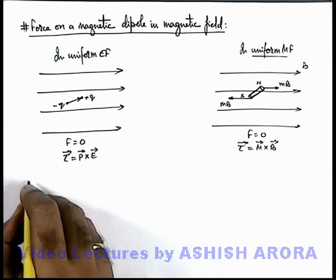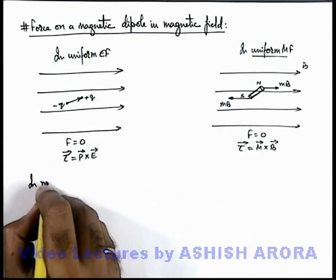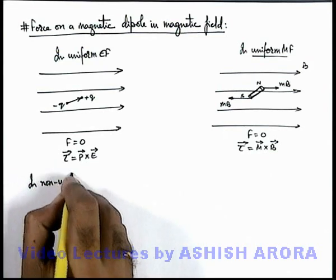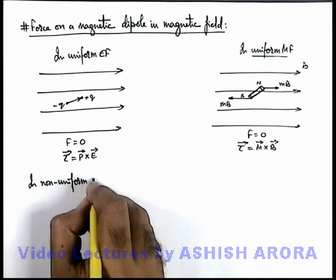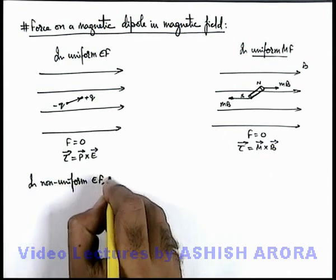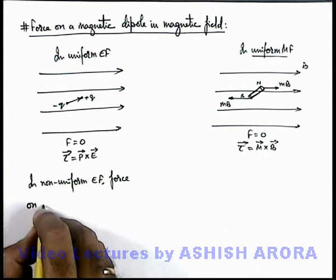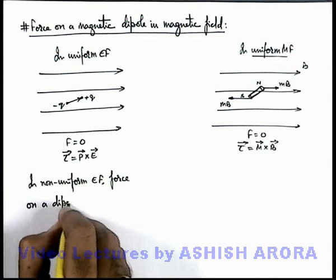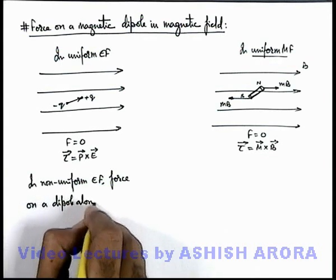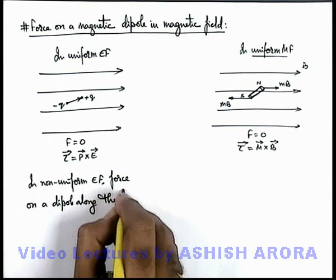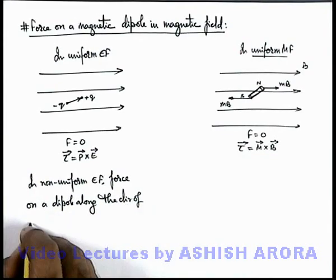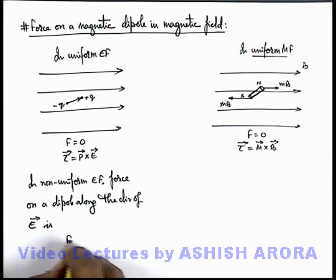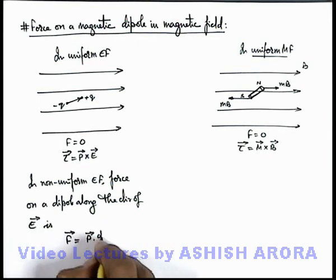And in electrostatics you can recall we have discussed that in non-uniform electric field, force on a dipole along the direction of electric field vector is - this force we can write as P dot dE by dr, e-cap.